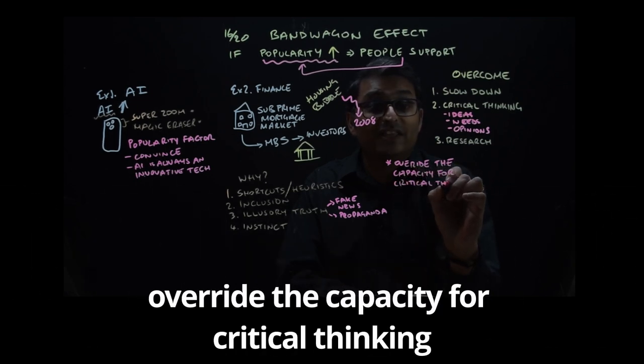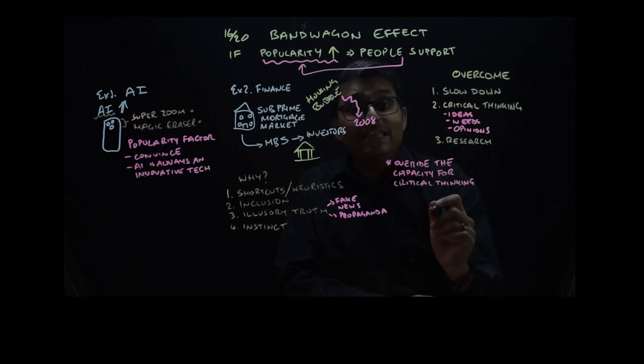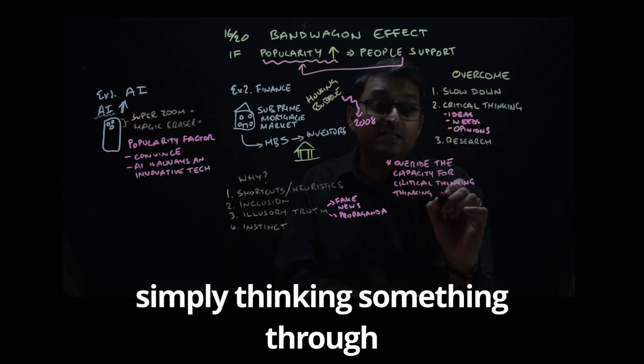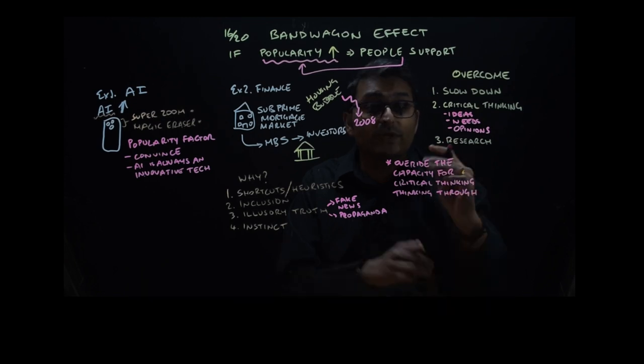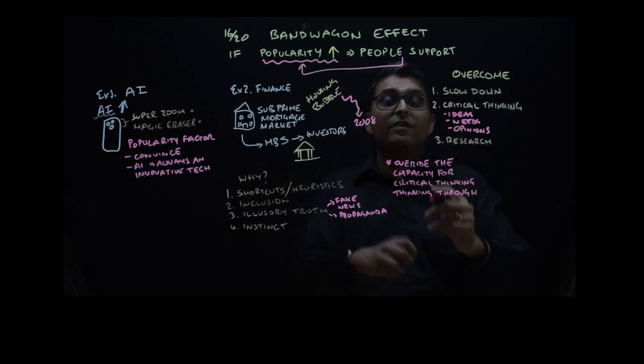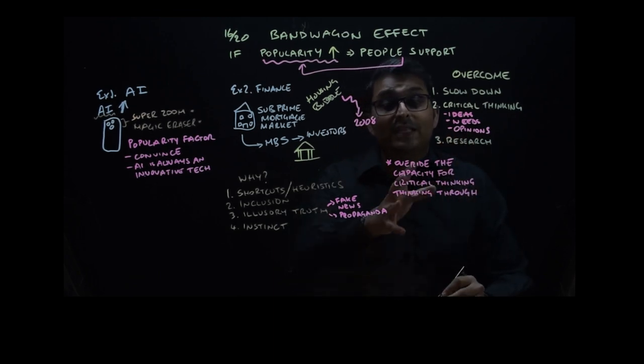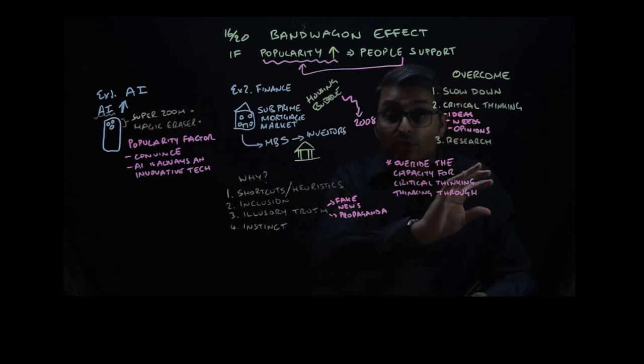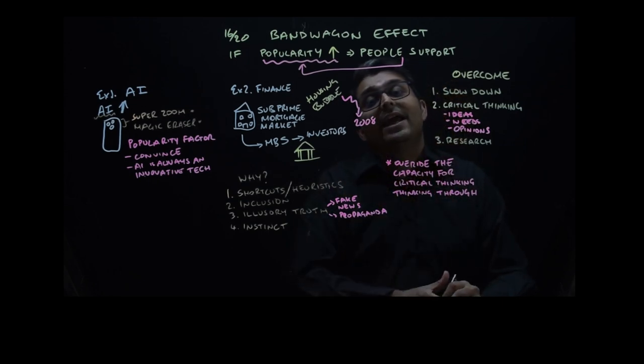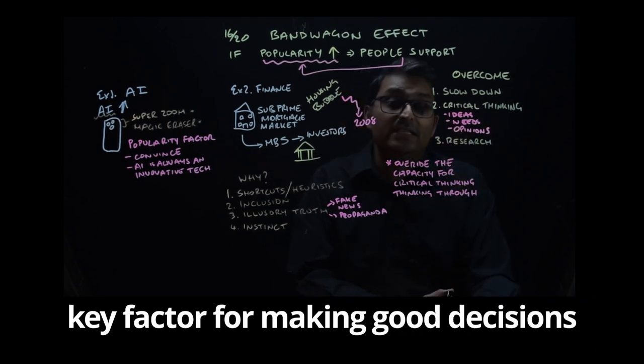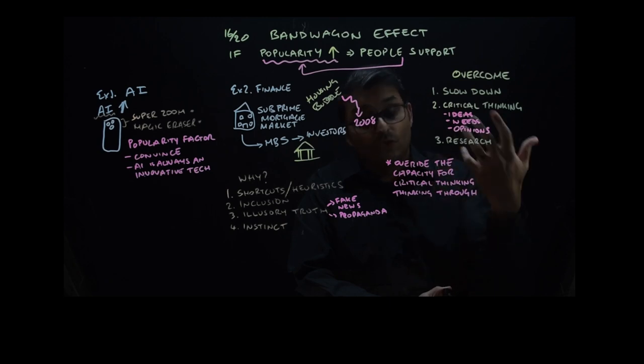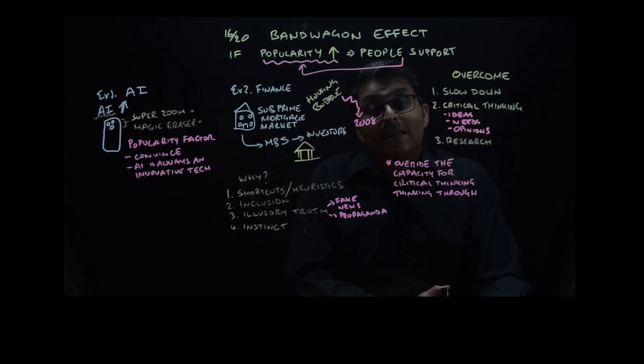You don't even need to do critical thinking, but you just need to think it through. So it can override the capacity for doing this, and this critical thinking or thinking something through is actually a key factor for making good decisions. So you're overriding that capacity and limiting yourself, or restricting yourself, from making a good or even a better decision.